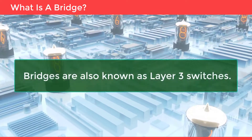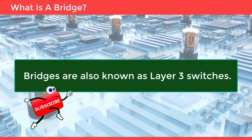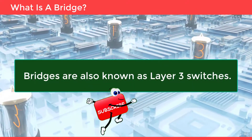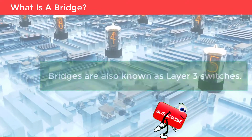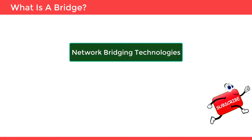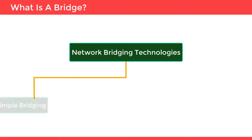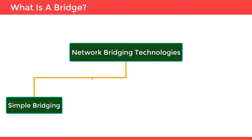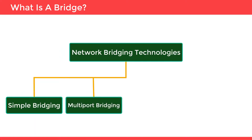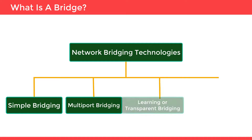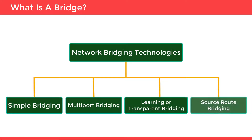Bridges are also known as layer 2 switches. There are four types of network bridging technologies: simple bridging, multiport, learning or transparent bridging, and source route bridging. Let's look into them one by one.